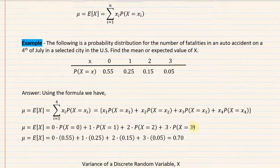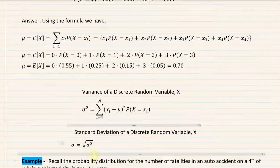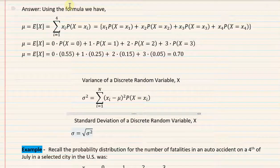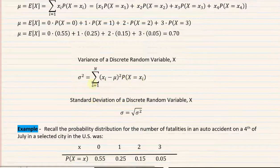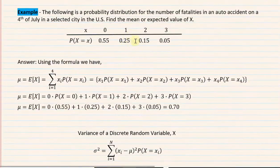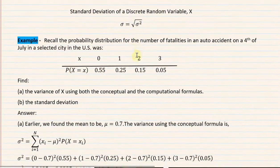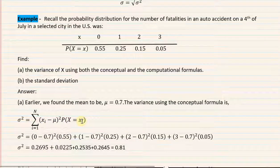Now let's look at the variance and standard deviation. The variance formula is σ² = Σ (x − μ)² · P(x). That means you subtract the mean from each outcome, square it, multiply by the probability of that outcome, then add them all up. The standard deviation is simply the square root of the variance.